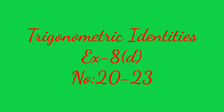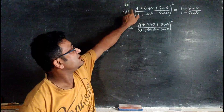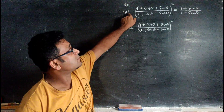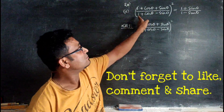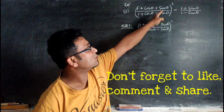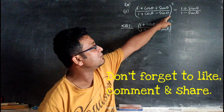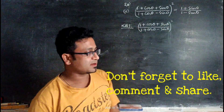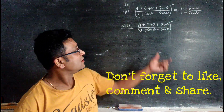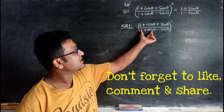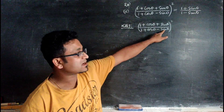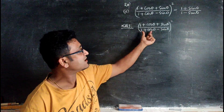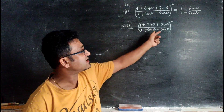Now see question number 20, this is the second part. We have: (1 + cosθ + sinθ) / (1 + cosθ - sinθ) whole square, and we have to show this is equal to (1 + sinθ) / (1 - sinθ). Here, 1 + cosθ can be taken as 'a' and sinθ can be taken as 'b', so if we consider a minus b, we can multiply by a plus b.